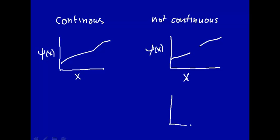Another example of a non-continuous function would be, say, psi of x versus x, and you're going along here, and then suddenly, from here to here, you jump and go up this way. So this is also not a continuous function. This is not a good property for a wave function.